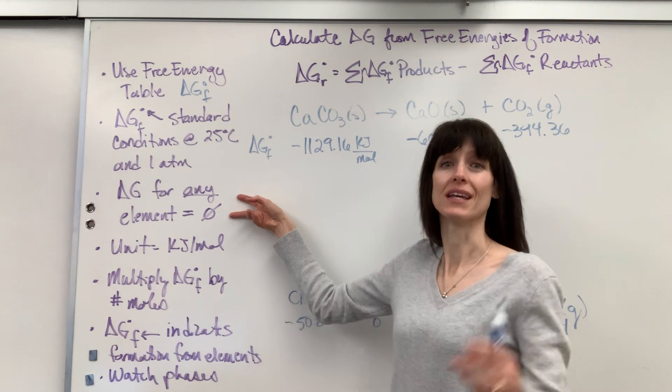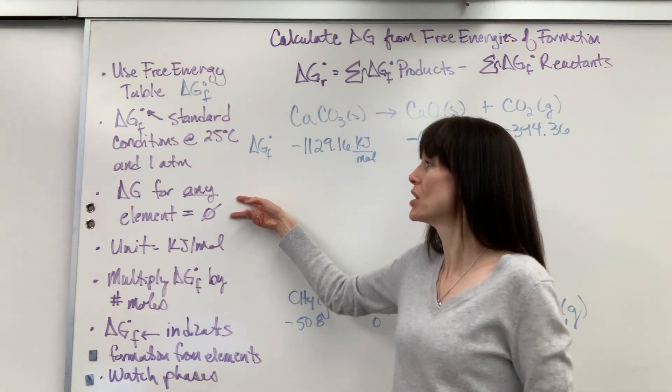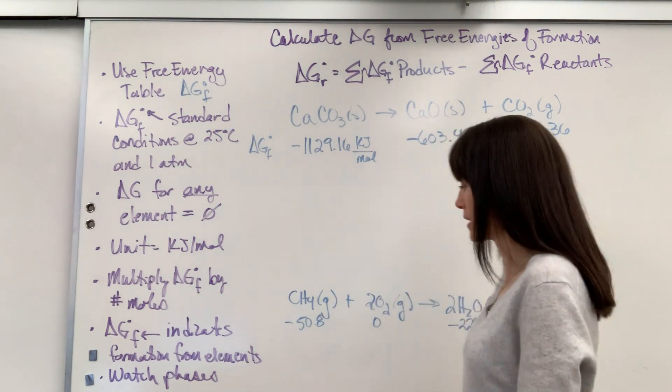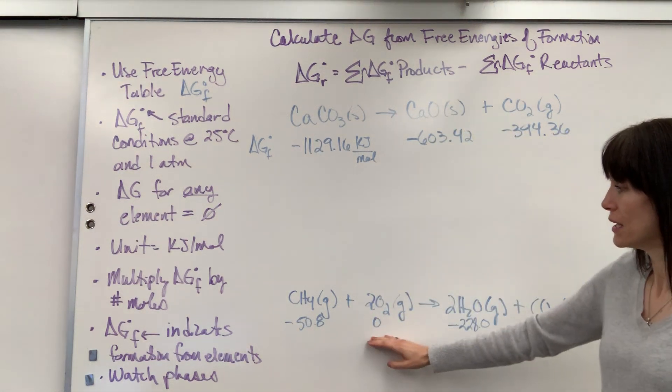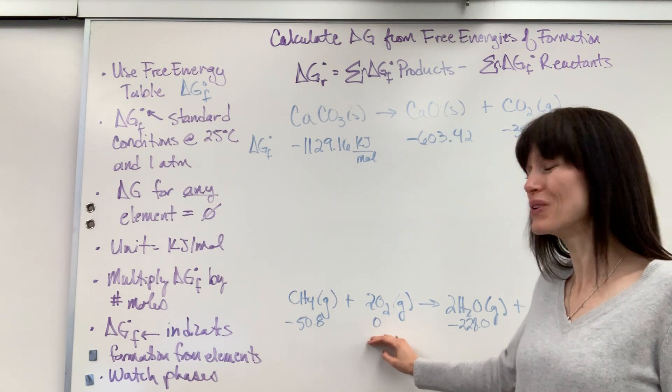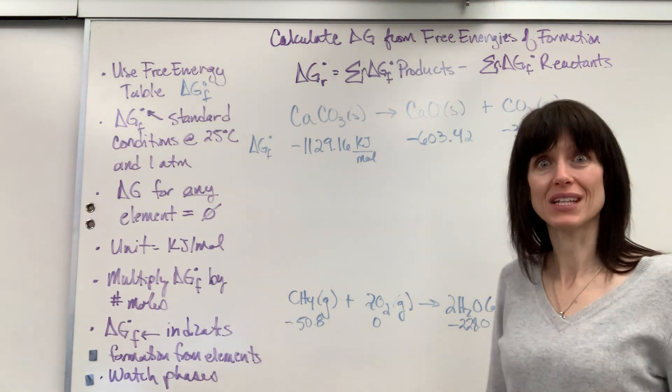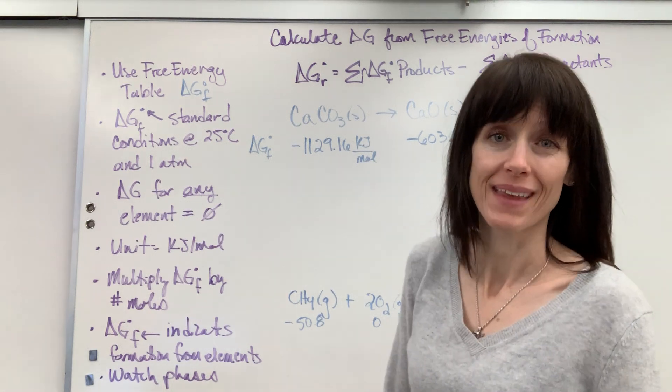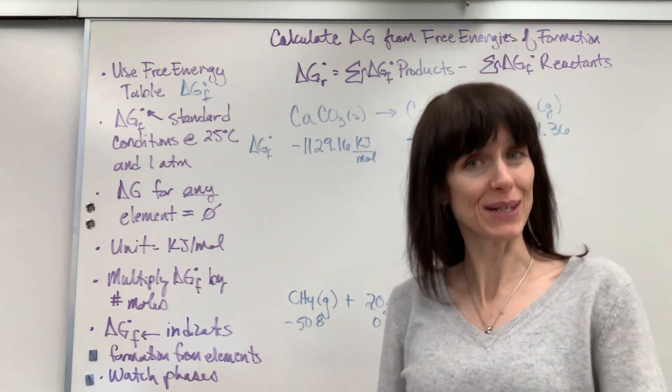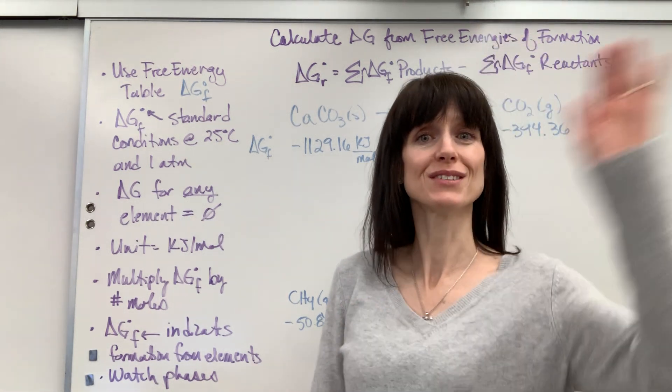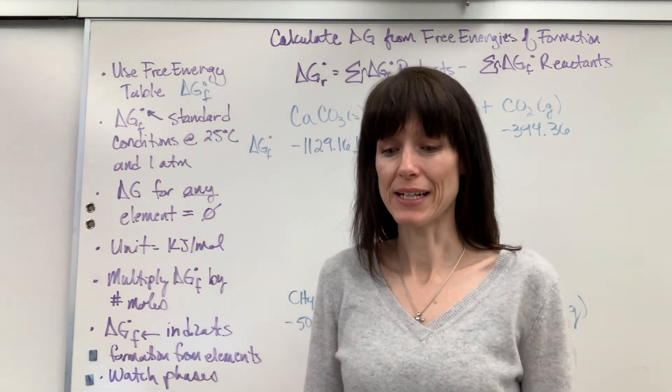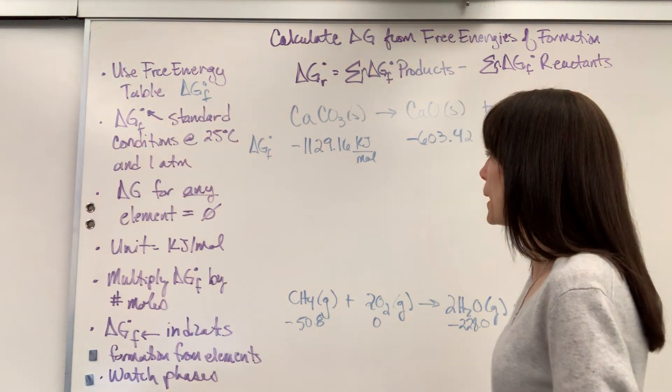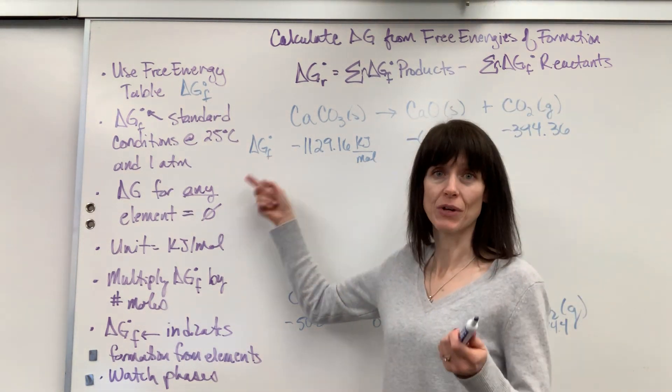This is important. It's similar to delta H. Delta G for any element is zero. I want to point that out. So I have two examples here. Look at this example down here. I have two moles of oxygen. Oxygen is an element, and so that is zero. And the reason why it's zero is that elements aren't formed on planet Earth. Elements are formed in the stars using fusion, excuse me, using fission.